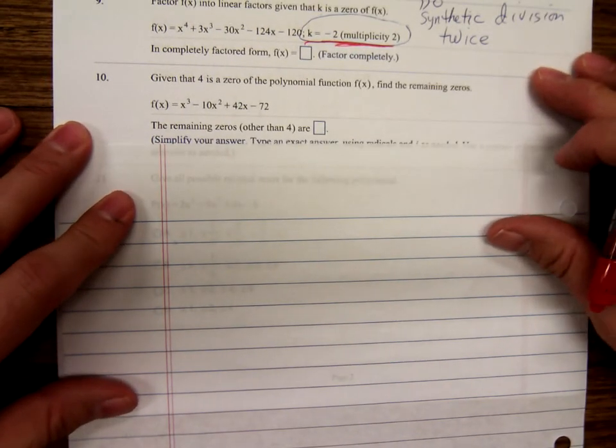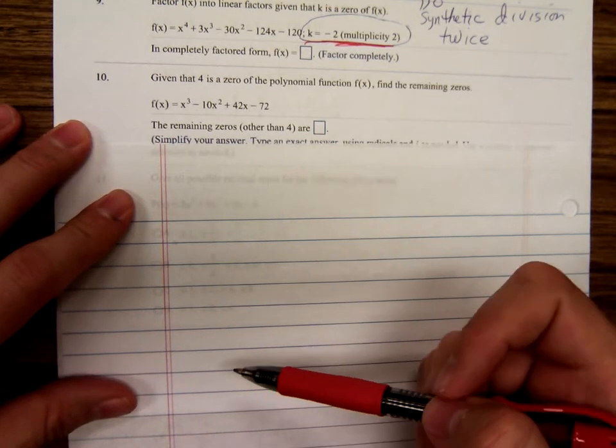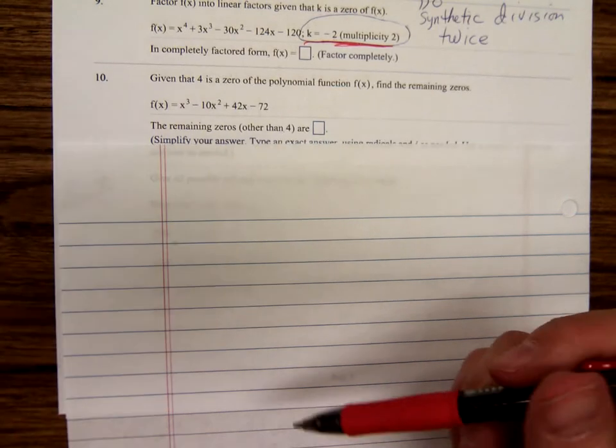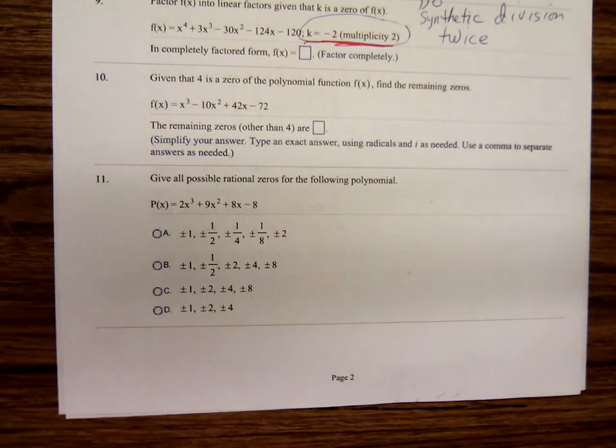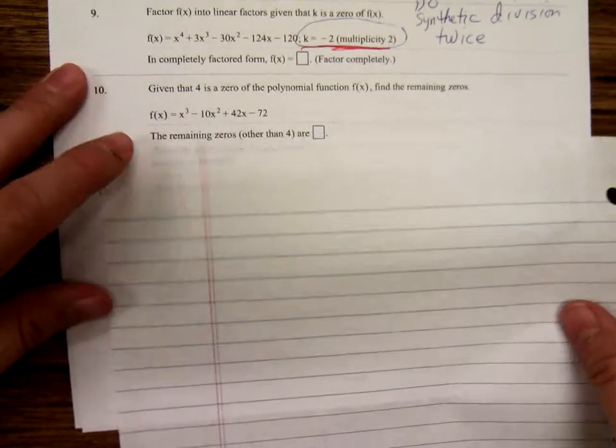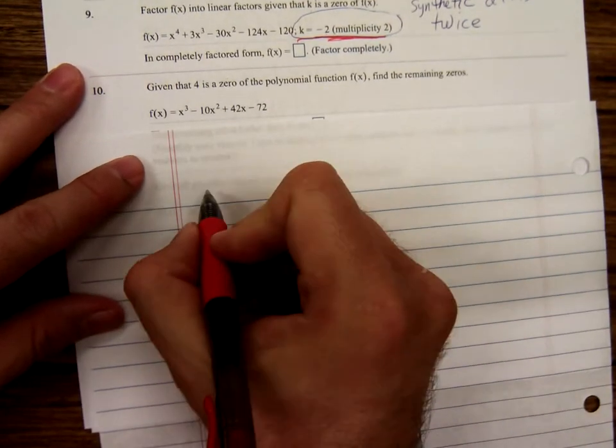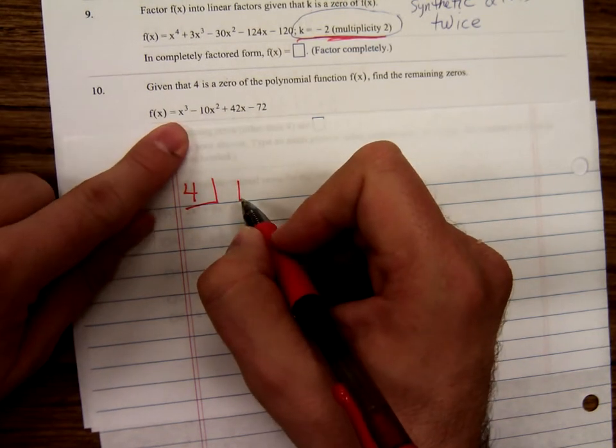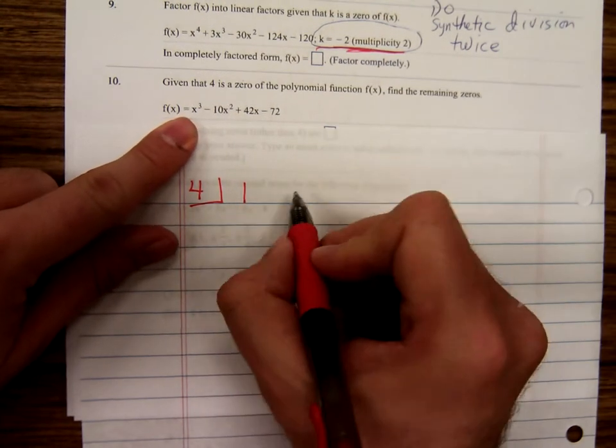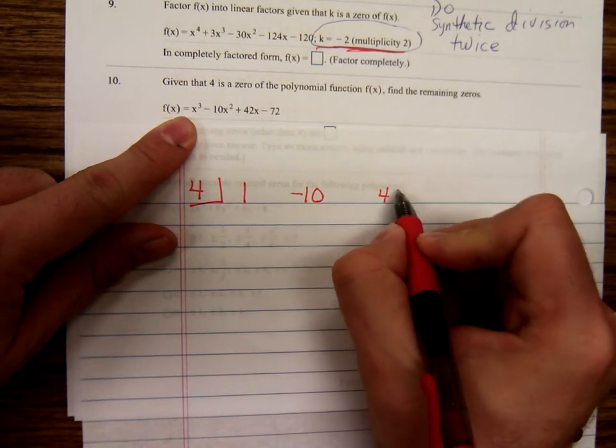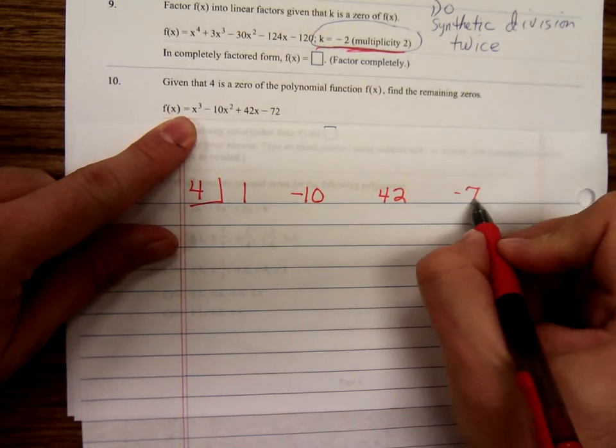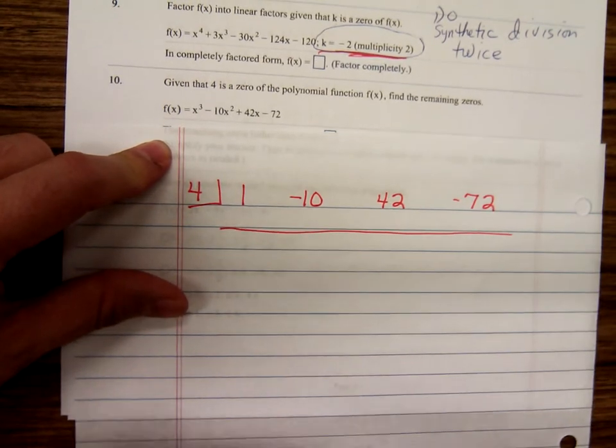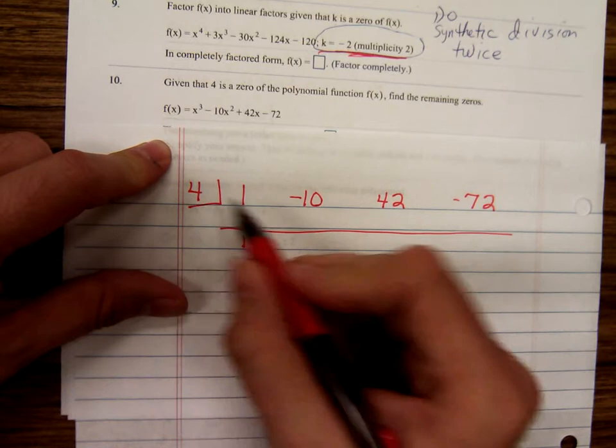Given that four is a zero, find the remaining zeros. So we know that four. So we're going to do what we did on number nine. Set up the synthetic division. Put a four here. Then write the coefficients. One, negative ten, forty-two, negative seventy-two. And let's see. Carry down the one. One times four is four.